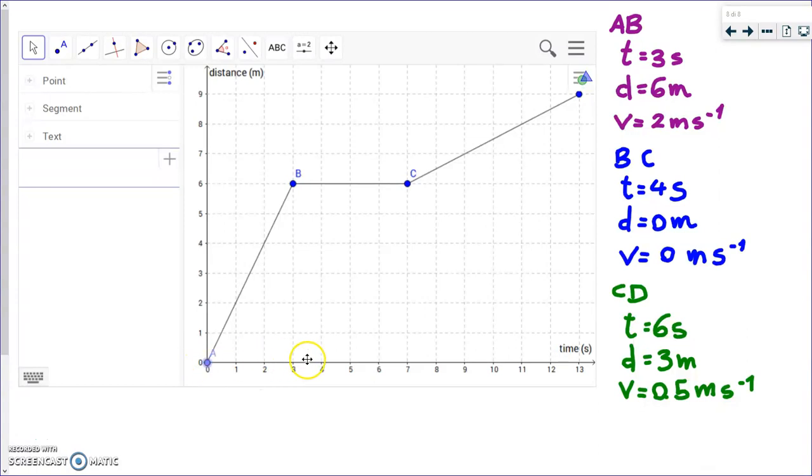From A to B, the trip takes three seconds. The distance traveled from A to B, that is six meters. This is a straight line, that means this is a constant speed. We do distance by time, and we see that the speed from A to B is two meters per second.